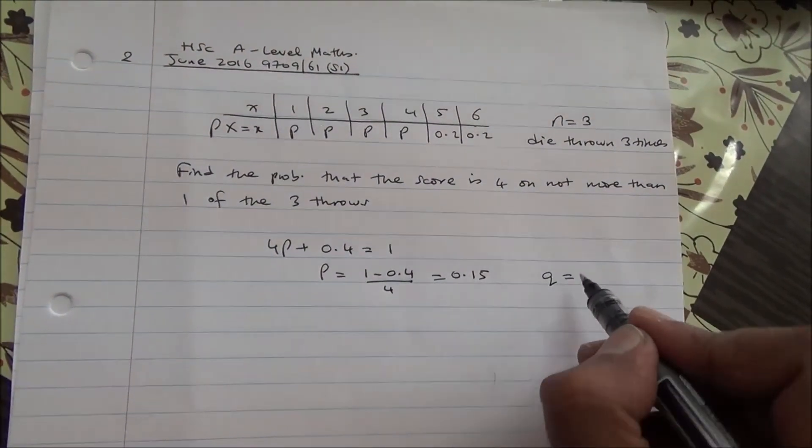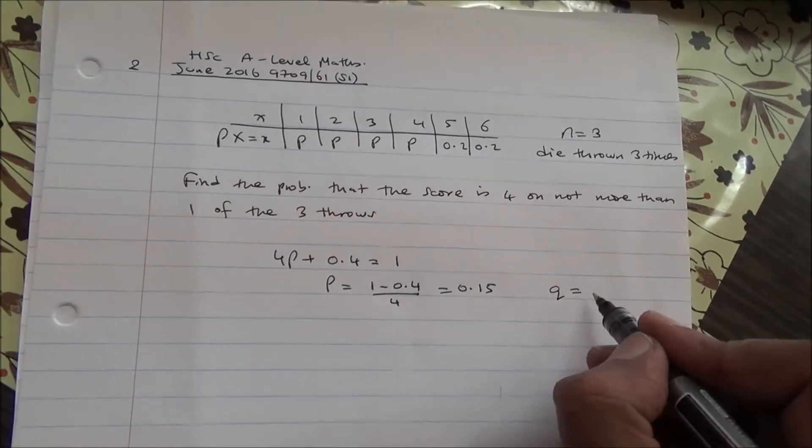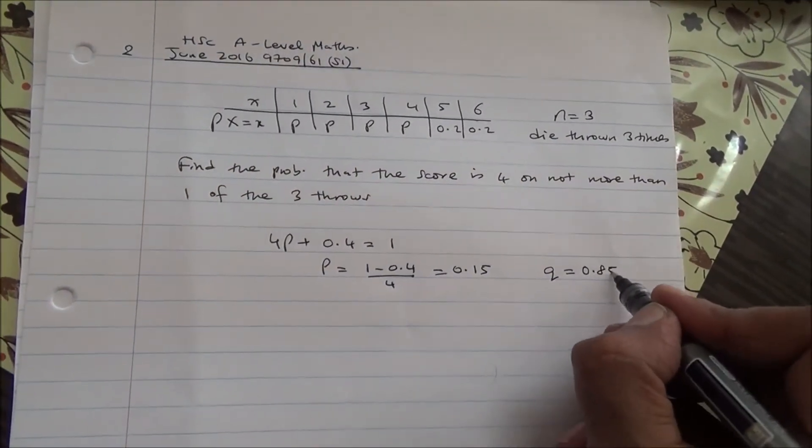The probability of getting a 4, that is probability of success, and probability of failure is going to be 0.85.